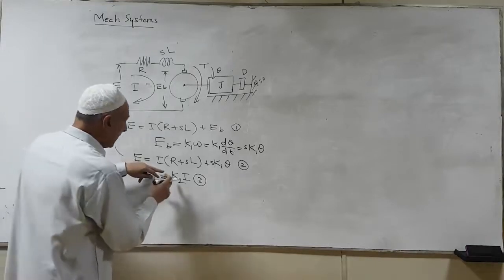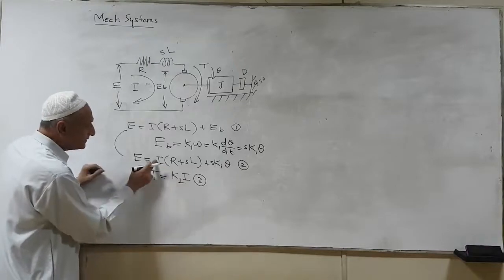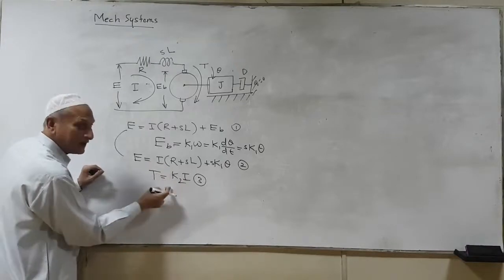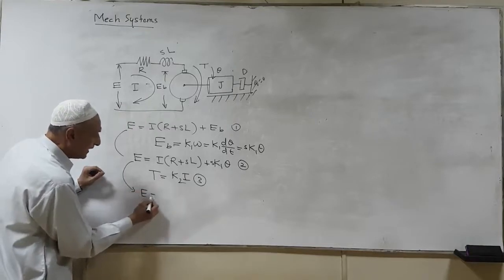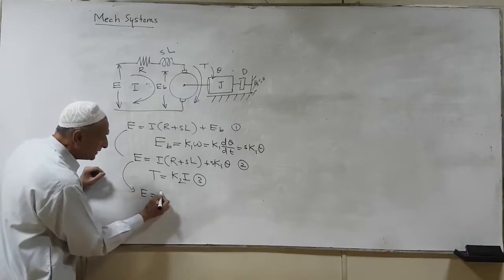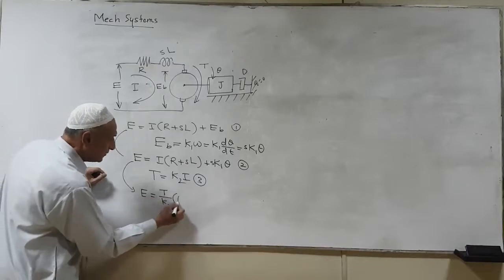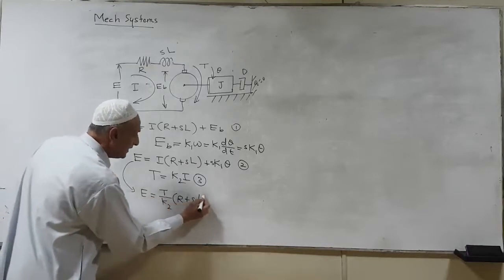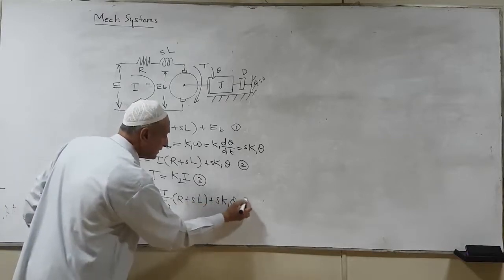We can simply replace this I by T by K2 from equation 3. So this equation can be expressed as T by K2 into R plus SL plus SK1 theta. This is equation 4.